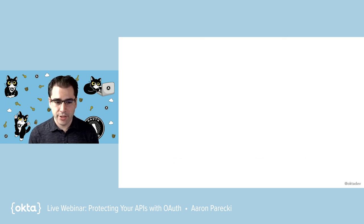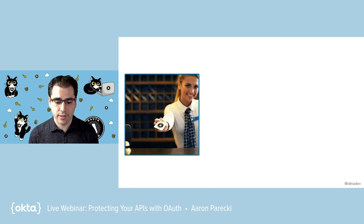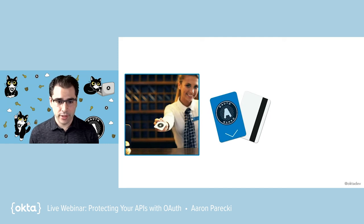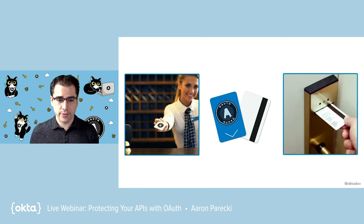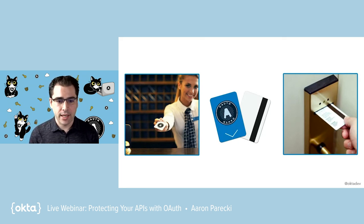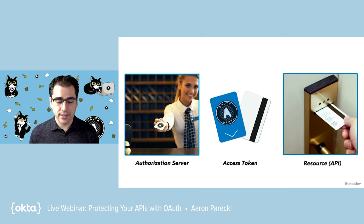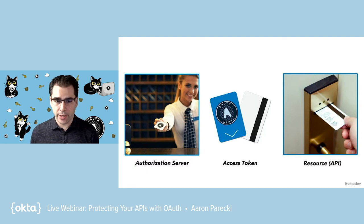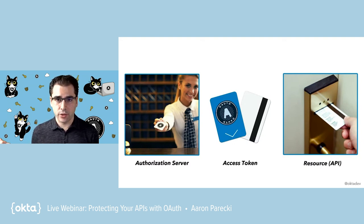I like to use the analogy of checking into a hotel. When you go to a hotel and check in at the front desk, you give the person your ID and a credit card, and they give you back a hotel key. You take this key, go to the door of your room, and swipe the key — the door lets you in. This is actually exactly analogous to OAuth. The person at the front desk is the authorization server, the key card is the access token, and the door is the API. In order for this system to work, the door does not actually need to know about the user — it doesn't need to know your name, email address, or even a unique ID for you. It just needs to know: does this card have access to this door right now?